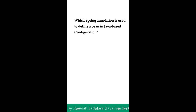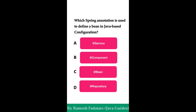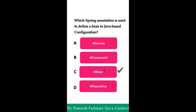Which Spring annotation is useful to define a bean in a Java-based configuration in a Spring Boot application? Other annotations like @Service, @Component, and @Repository are used to create a Spring component or bean using annotation-based configuration, but the @Bean annotation is typically used to create a bean using Java-based configuration in a Spring Boot application.